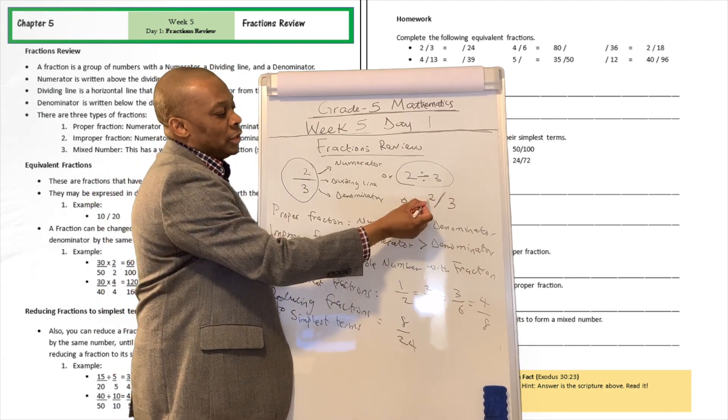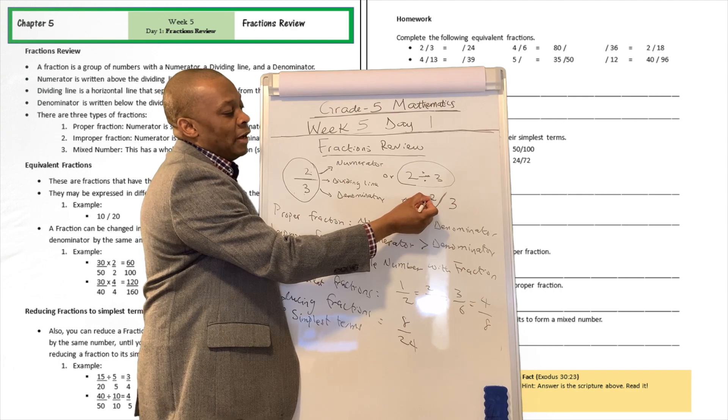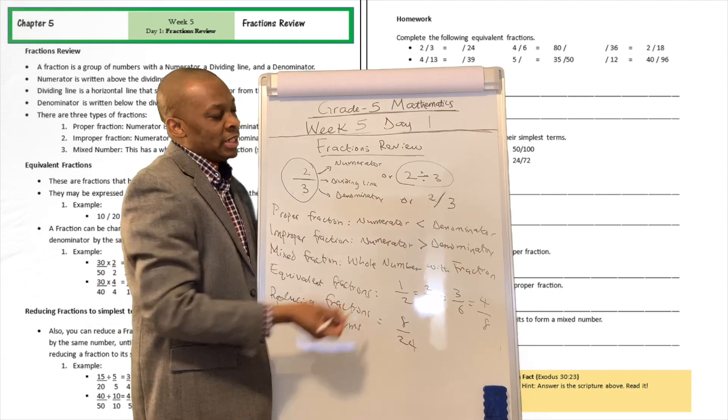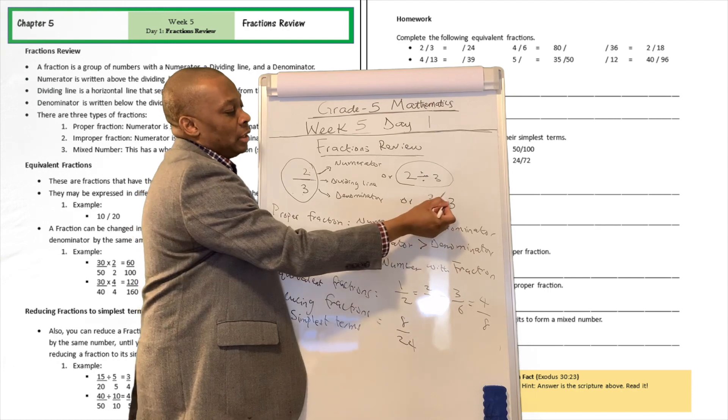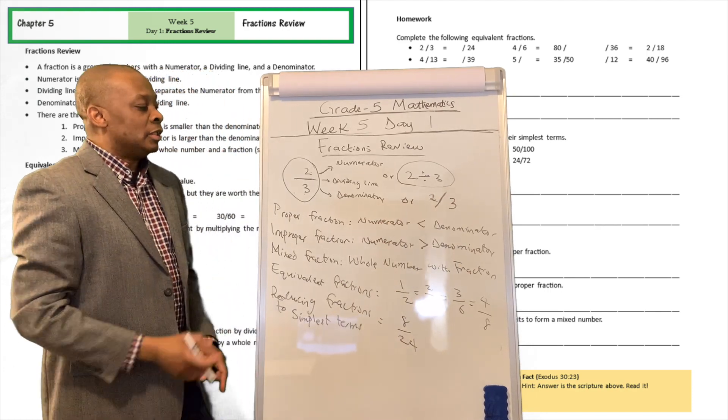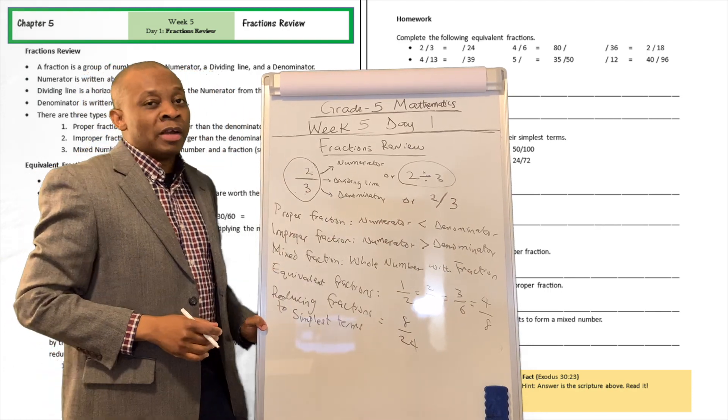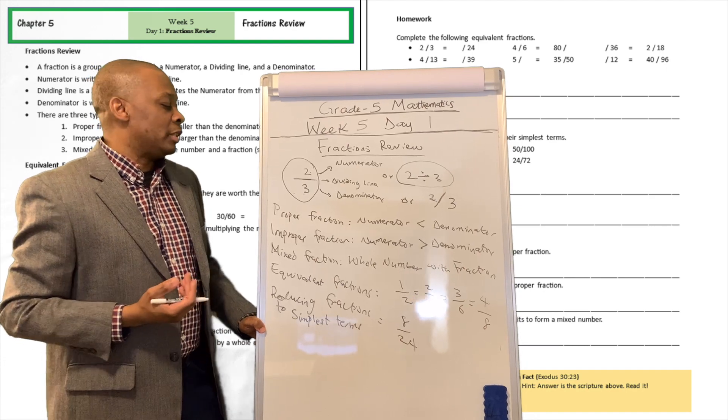And sometimes we can write fractions like two slash three. The numerator is going to be on top of the slanted line like this, and then the denominator is going to be written after it. So these are different ways that people write fractions, and you've got to be familiar with that.